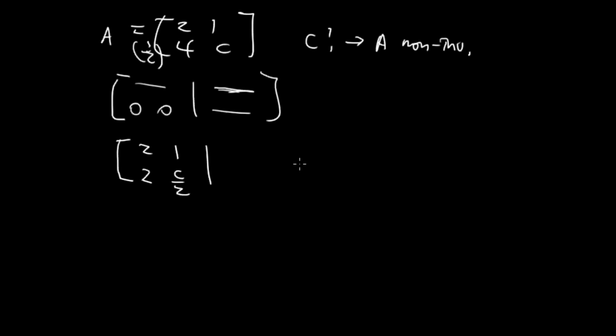If C over 2, and it doesn't really matter what's here because we're just trying to get this row to be zero, zero.